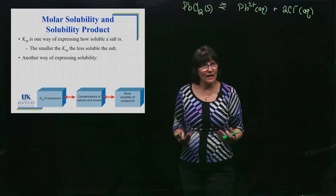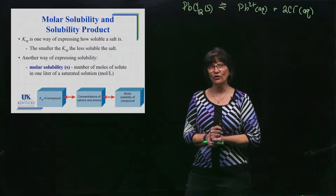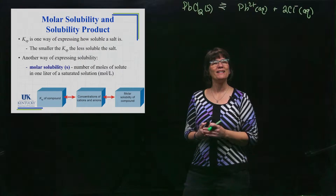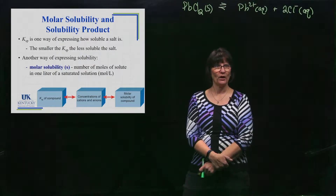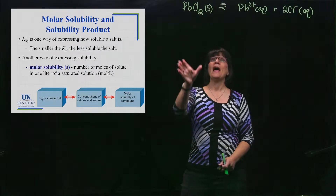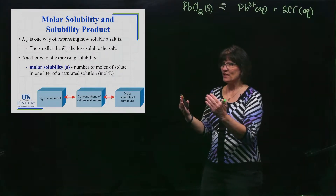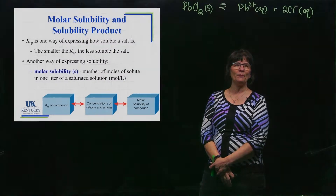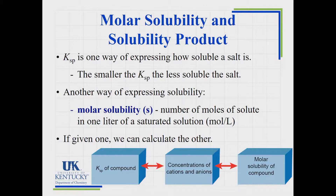You could take it one step further and express solubility as molar solubility, abbreviated with a lowercase s. By definition, molar solubility is the number of moles of solute that will dissolve in a liter of saturated solution — moles per liter. There are three boxes: if you know KSP you can get to molar solubility, and vice versa. In between, you'll need the concentrations of the cations and anions.